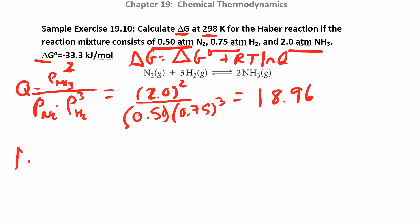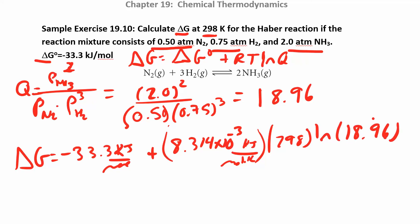Now you just want to plug in everything else. Delta G is equal to delta G naught, negative 33.3 kilojoules per mole, plus R. I'm going to use the 8.314. I'm going to put that in kilojoules. So I just divide the R that was given on the other page by 1,000 to get it into kilojoules per mole kelvin. R times T times the natural log of 18.96. You guys should know how to do that by now.